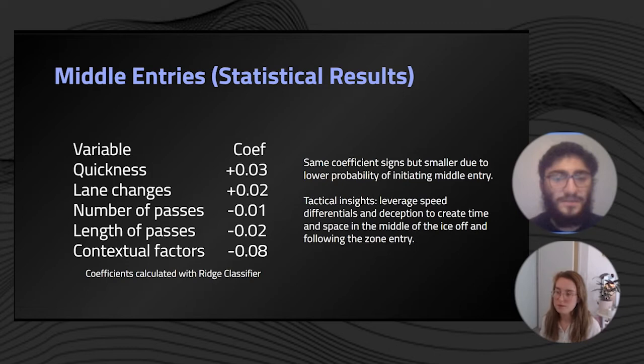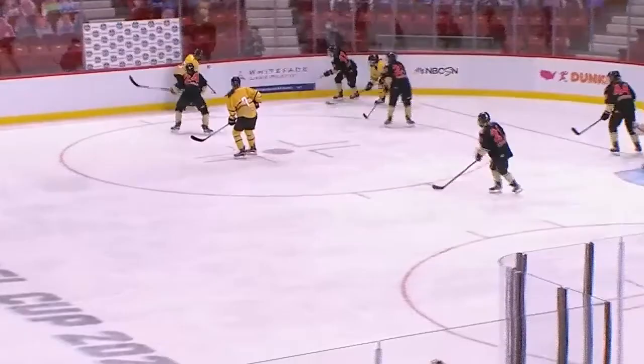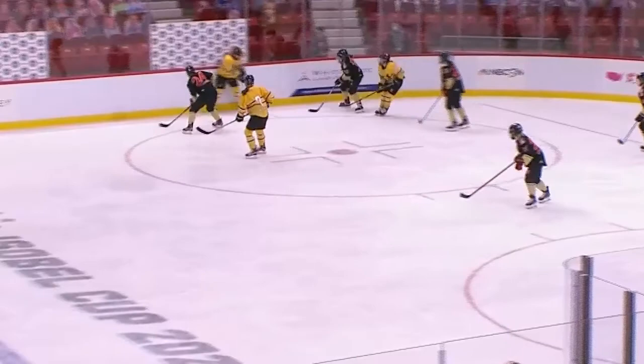In terms of tactical insights, leveraging speed differentials and deception to create time and space in the middle of the ice is very important to be able to gain the middle of the ice off the entry, but also following the entry to leverage these high-danger areas in the offensive zone.